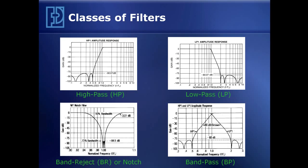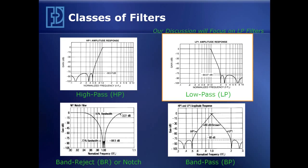There are four basic classes of filters. The high-pass filter, which rejects low frequencies and passes high frequencies. There's a low-pass filter, which passes low frequencies and rejects high frequencies. The notch filter, or band-reject filter, which rejects a band of frequencies. And then the band-pass filter, which passes a band of frequencies. Our discussion today will primarily focus on the low-pass filter.